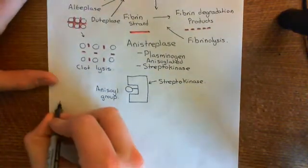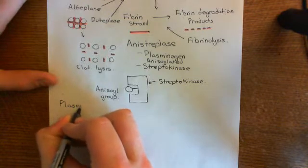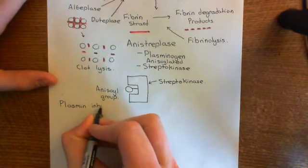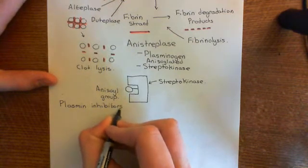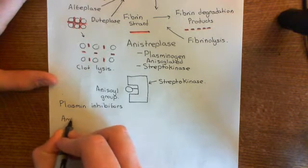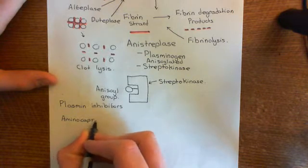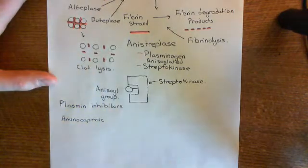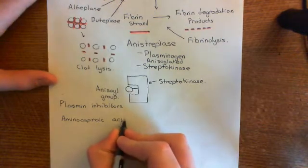We're going to discuss plasmin inhibitors. The first is a drug known as aminocaproic acid. I want to show you the structure of this because it's so simple. Aminocaproic acid will competitively inhibit plasmin — it will go into the active site, it looks very like lysine, and it binds to the active site of plasmin and stops it from functioning.